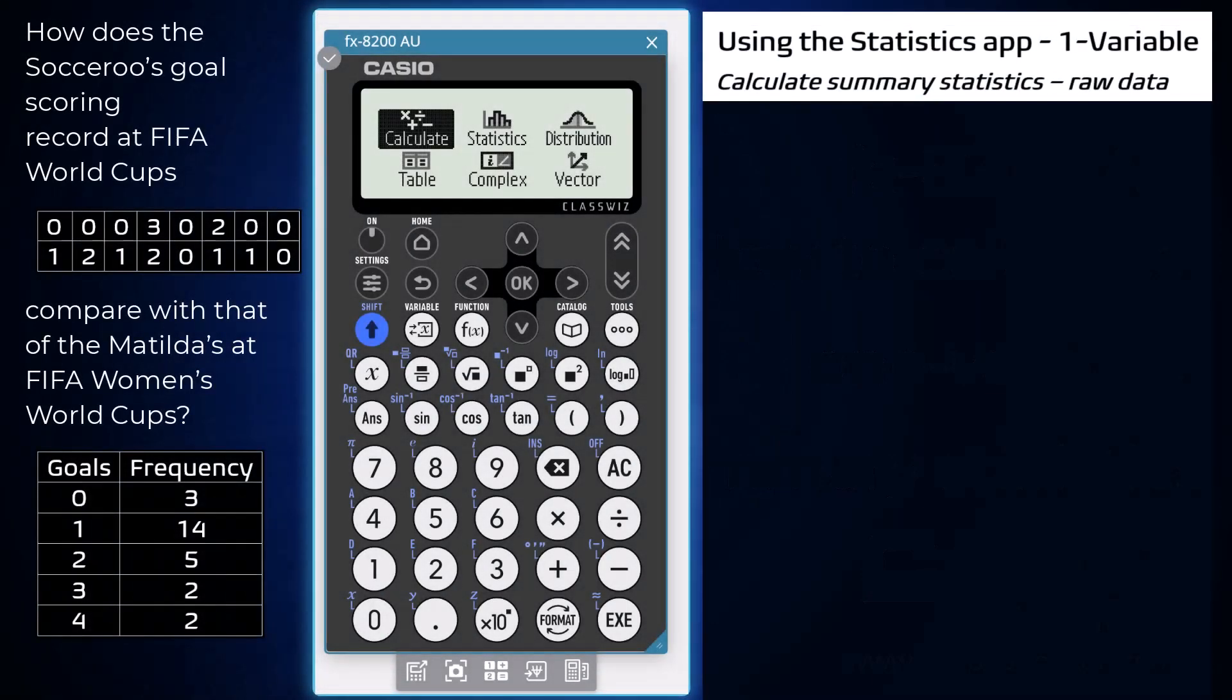The statistics app of a Casio FX8200AU can be used to calculate summary statistics for univariate data sets in both raw form and when the data is presented in a frequency table.